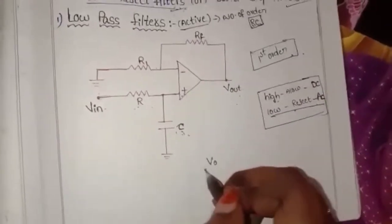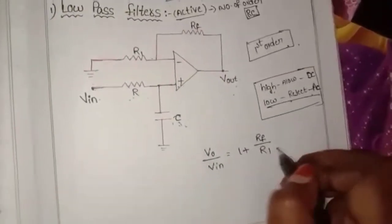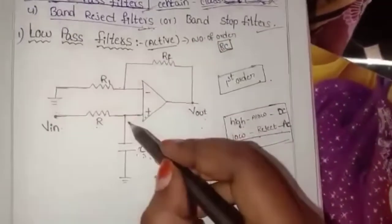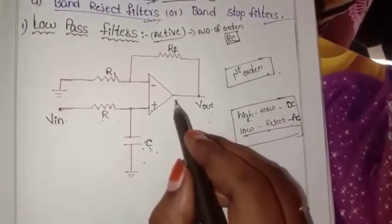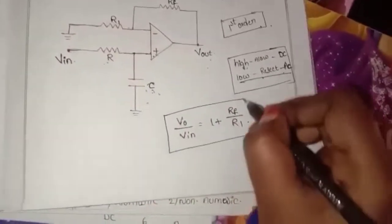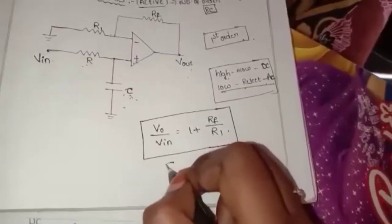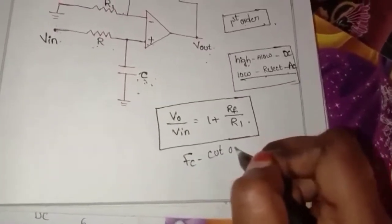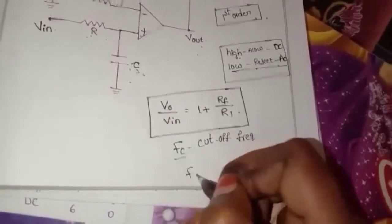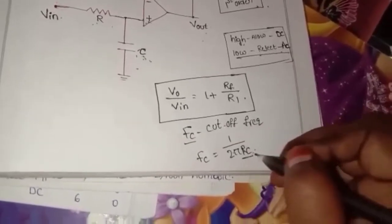The output voltage gain is V0 by Vin equals 1 plus RF by R1. This is the non-inverting amplifier voltage gain. The cutoff frequency Fc is calculated using the formula: Fc equals 1 divided by 2 pi RC, where R is resistance and C is capacitor. That is the cutoff frequency formula.